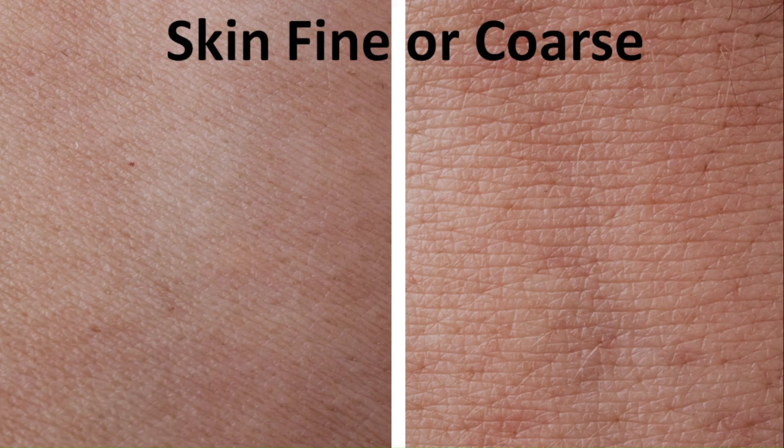The best place to look is the back of your hand. If the skin is smooth and the cells of the skin are small and close together, like the hand on the left, this is considered a fine texture. If the cells are big and further apart and the skin is rough, this is considered coarse.